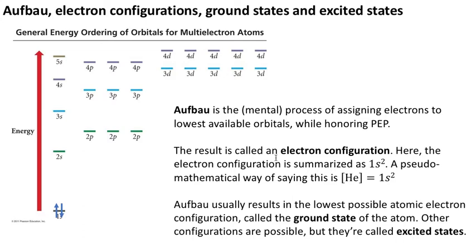There's an idea that we've used so far but haven't named: it's called aufbau. Aufbau is the mental process of assigning electrons to the lowest available orbitals while honoring the Pauli Exclusion Principle. The result of that is a shorthand called an electron configuration. Here, the electron configuration we would call 1s with a superscript 2, which means there are two electrons in that 1s orbital, which is helium. A mathematical way of saying that would be: the electron configuration of helium is 1s².